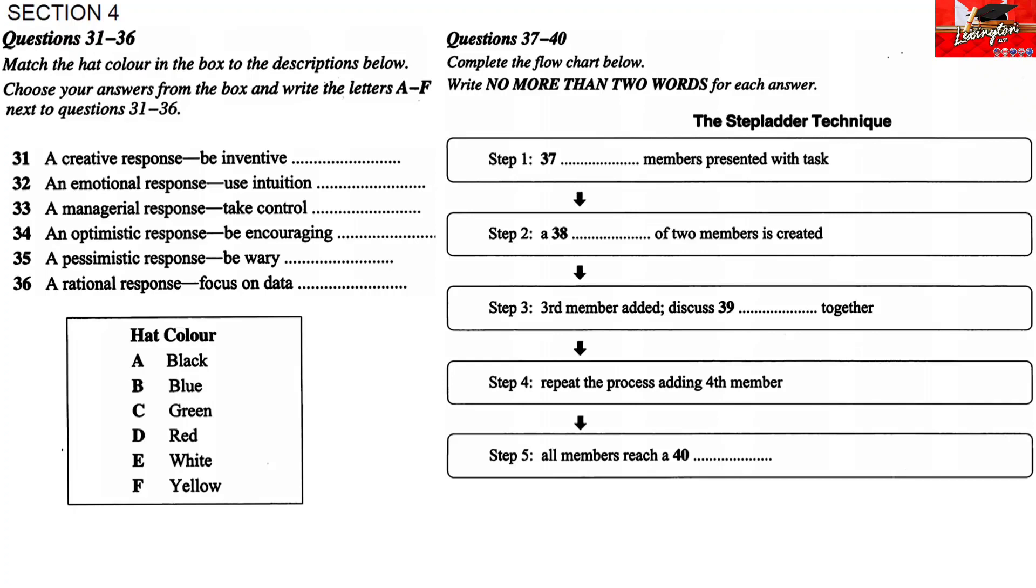Firstly, members contribute on an individual level. The task is presented to them. They are given time to think and form their own opinions about how to solve the problem. You do this before you get them together as a group. Secondly, you form a core group of just two people and allow them time to discuss the topic of concern.